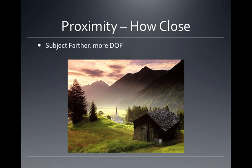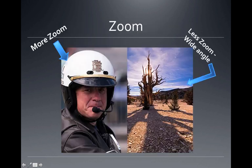When the subject is farther away, depth of field is greater. Zoom — if you zoom in on a subject, the background is blurry. If you're wide-angle or zoomed out, more is in focus. So zoomed in gives you a smaller depth of field. Zoomed out, wide-angle, gives you a greater depth of field.